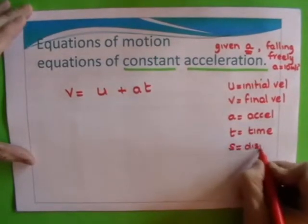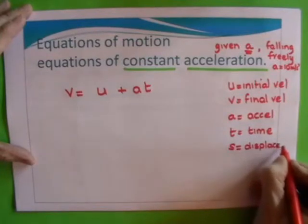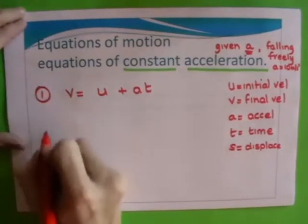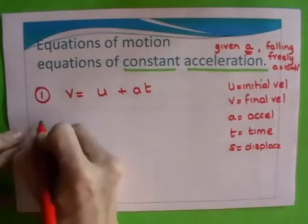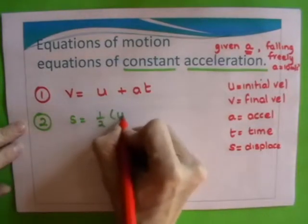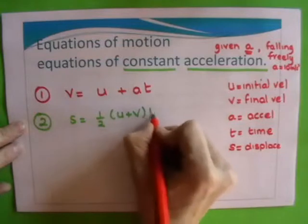And there's another one which isn't in this equation: s is equal to displacement or distance. So your second equation is displacement equals a half times u plus v times t.